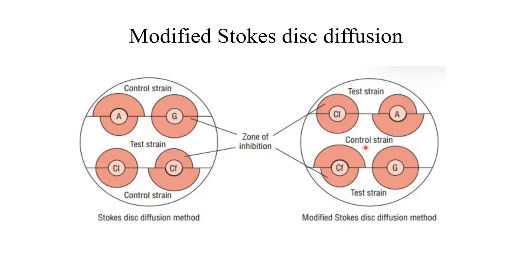In this modified Stokes diffusion method, the center portion, we will lawn culture the control strain and the other portions, the first part and the third part, we will lawn culture the test strain. After that, we will compare the control strain diffusion or the zone of inhibition with the test strain.